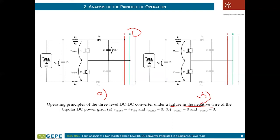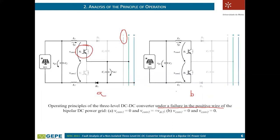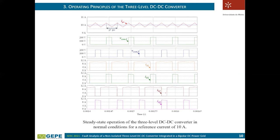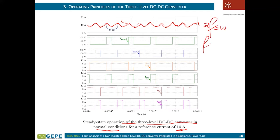It is possible to see that in all three failure situations the converter operates in boost mode, however without all the features that it can operate with under normal conditions. This slide shows some of the obtained results. During normal operation with a reference current of 10 amps, the current follows the reference perfectly, and it is possible to see that the current has a ripple at double the switching frequency of each switching device.